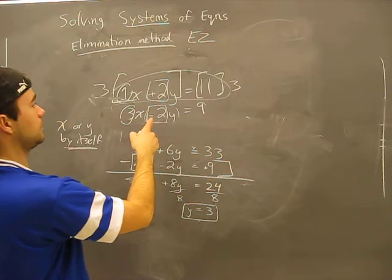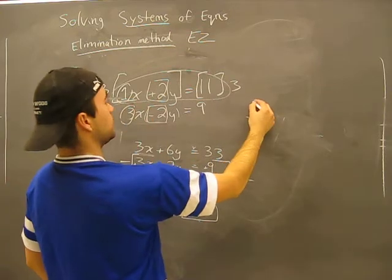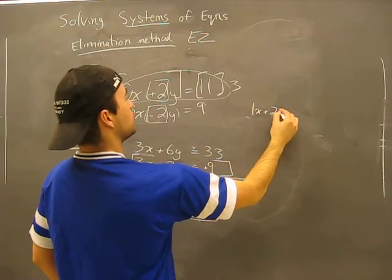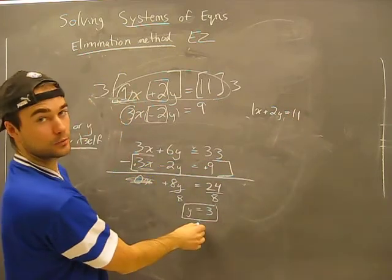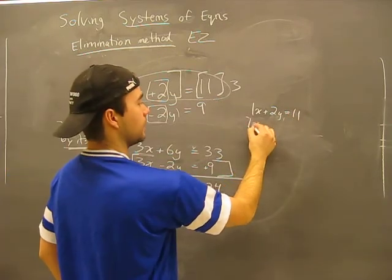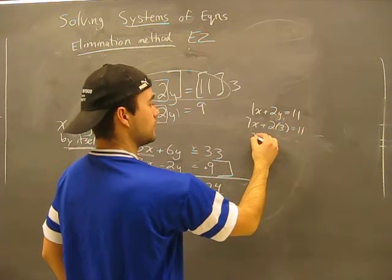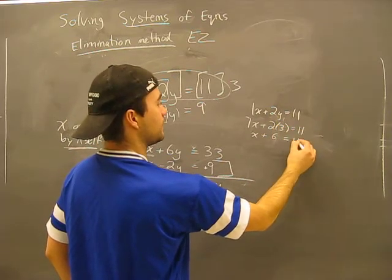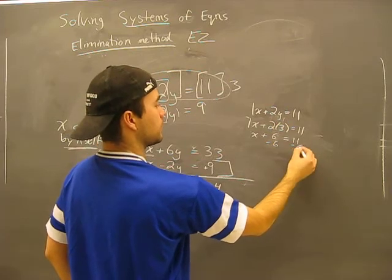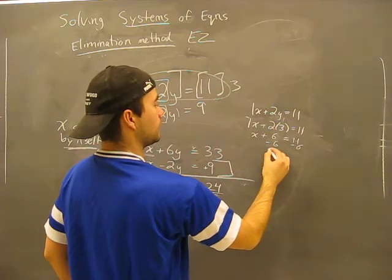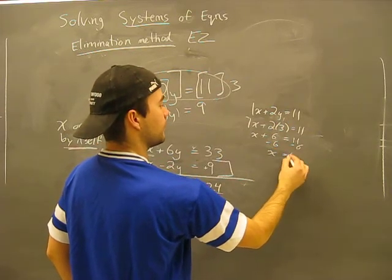Now all you need to do now is input this into either one of the equations to find out what the corresponding x value is. I'll go into the easiest equation here, the top one, 1x plus 2y equals 11. If y equals 3, 1x plus 2 times 3 equals 11. X plus 6 equals 11. Minus 6 minus 6. X equals 5.